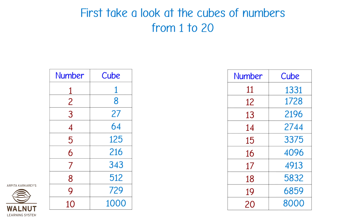11 cubed is 1331, 12 cubed is 1728, 13 cubed is 2197, 14 cubed is 2744, 15 cubed is 3375, 16 cubed is 4096, 17 cubed is 4913, 18 cubed is 5832, 19 cubed is 6859, and 20 cubed is 8000.